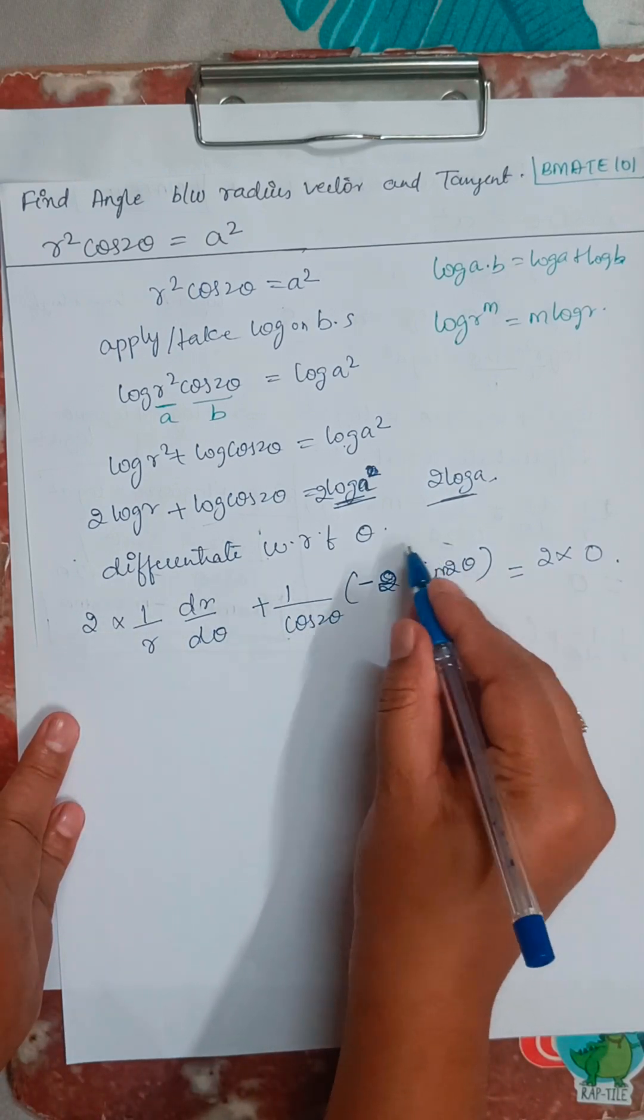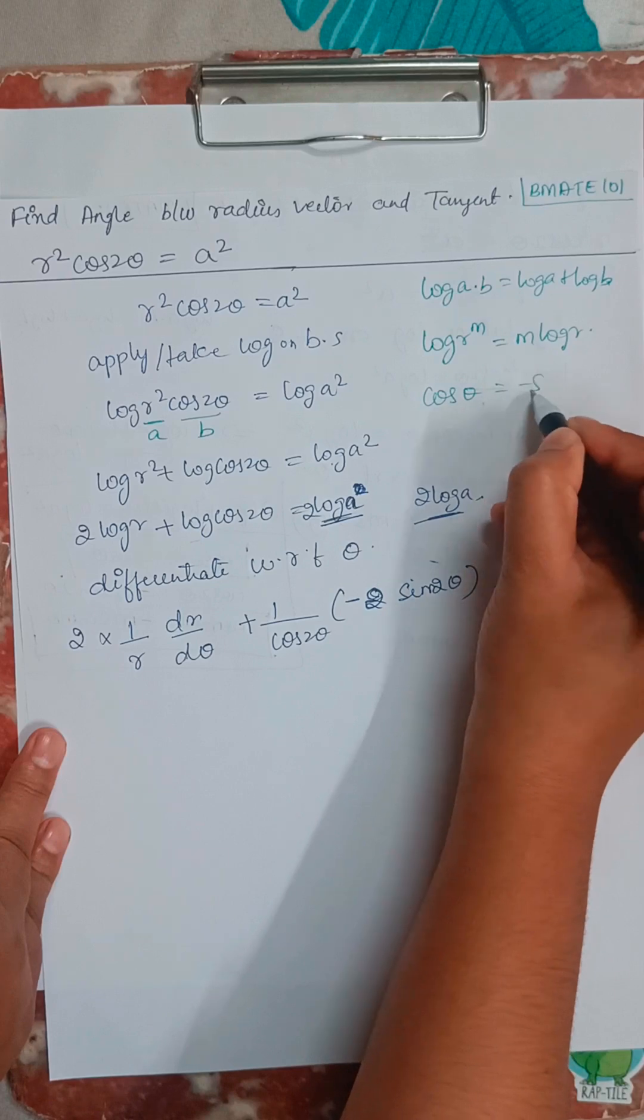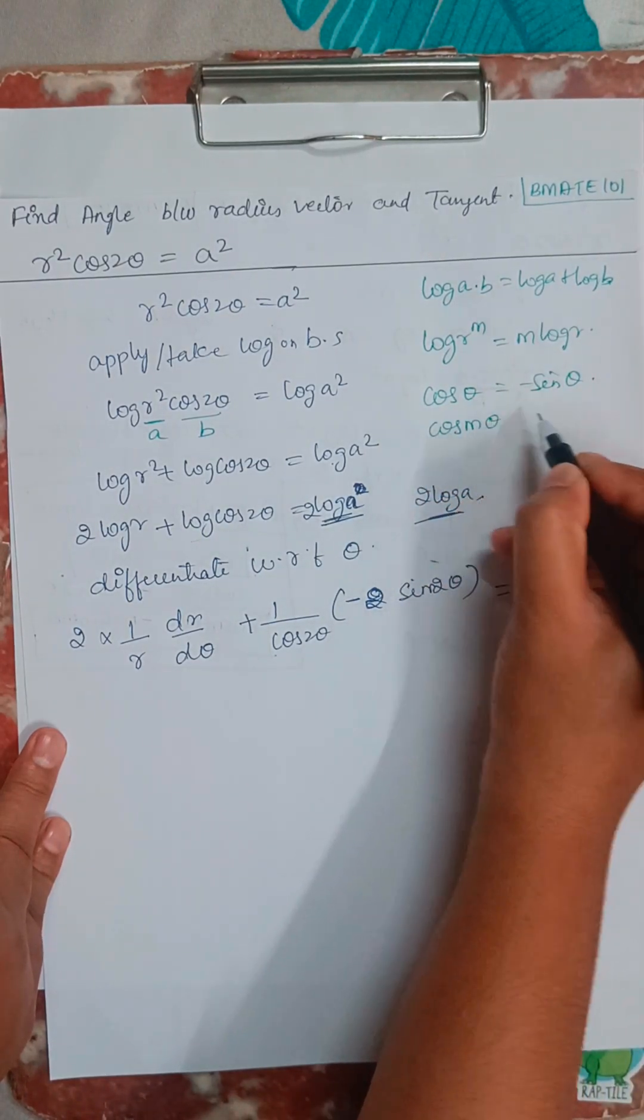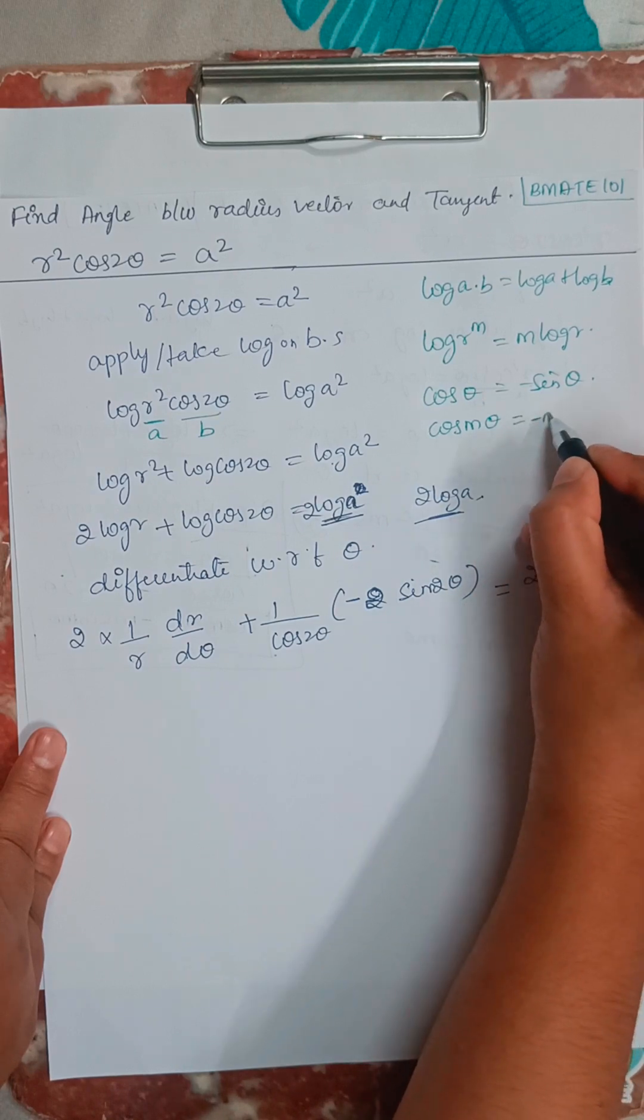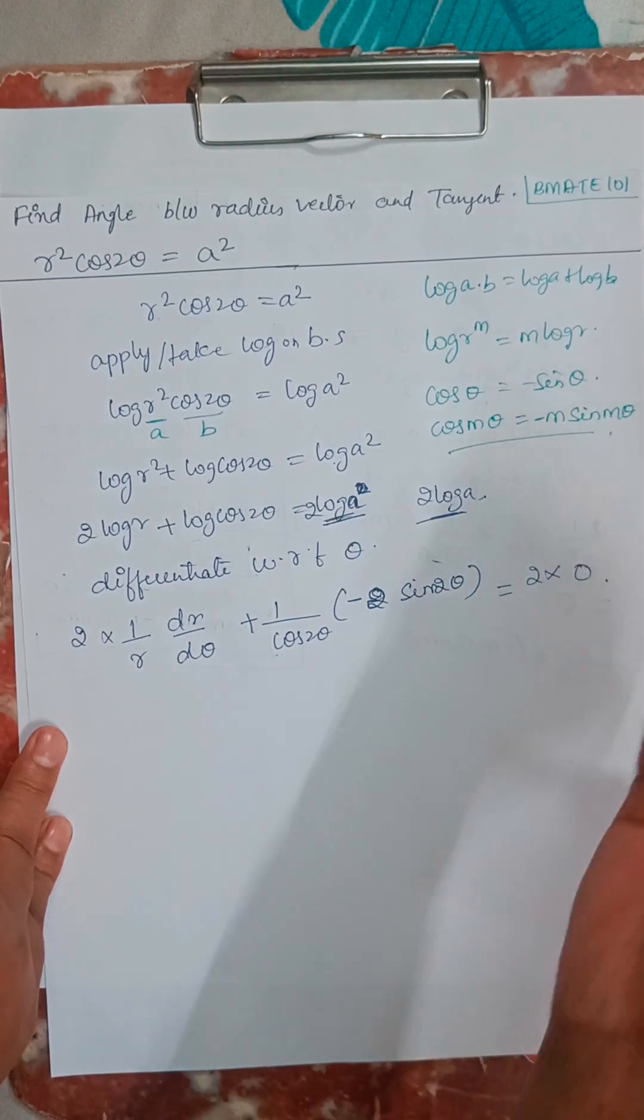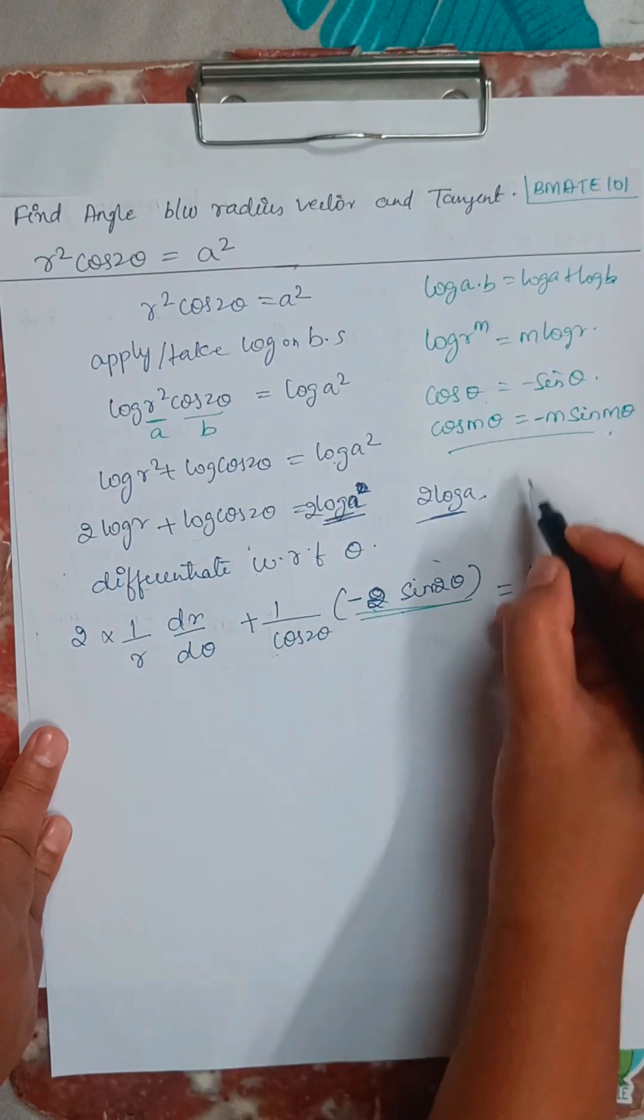Just if you want to understand, differentiation of cos theta is minus sin theta. So differentiation of cos m theta is going to be minus m sin m theta. So this is nothing but that itself.